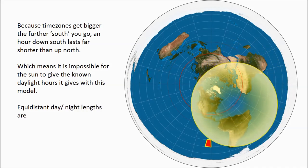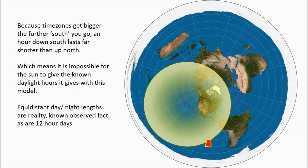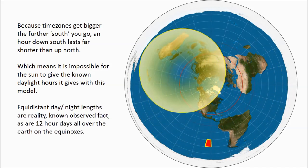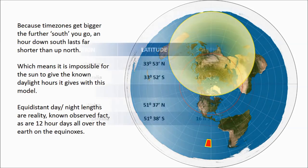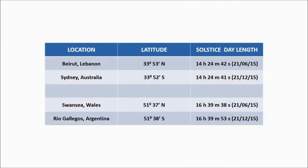And then we have the equidistant solstices, six months apart, north and south. Here's two pairs of examples. Pause, check it out for yourself. Go check some other places. Do your own research. But this is truth.